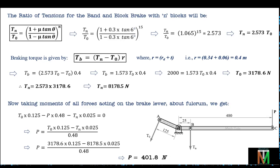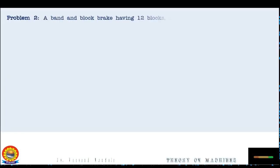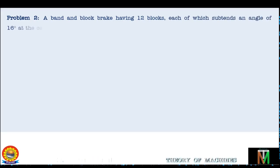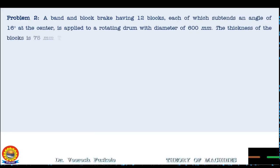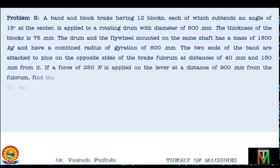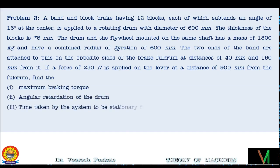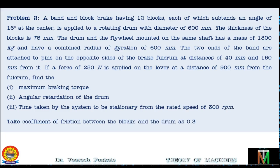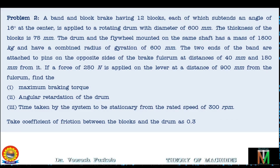Now let's move to the second problem. A band and block brake having 12 blocks, each subtending an angle of 16 degrees at the center, is applied to a rotating drum with diameter 600 mm. The thickness of the blocks is 75 mm. The drum and flywheel mounted on the same shaft have a mass of 1800 kg and a combined radius of gyration of 600 mm. The two ends of the band are attached to pins on opposite sides of the brake fulcrum at distances of 40 mm and 150 mm from it.